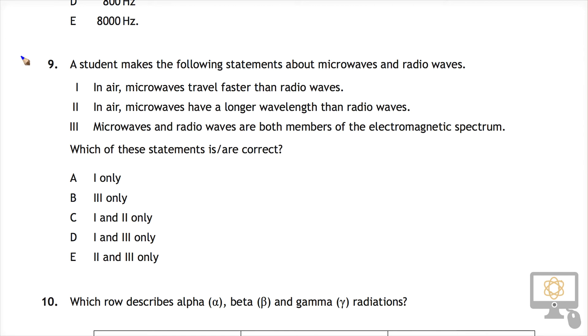I would say that 3 is definitely correct. Microwaves and radio waves are both members of the electromagnetic spectrum, along with the ultraviolet and infrared and so on.